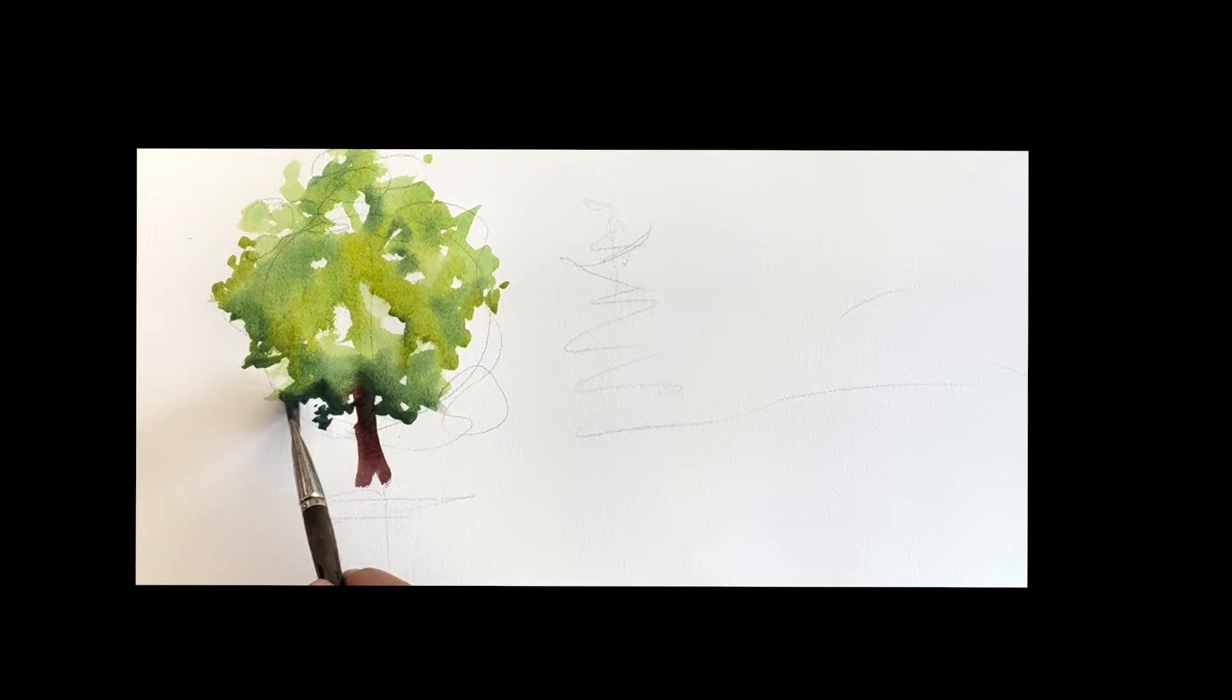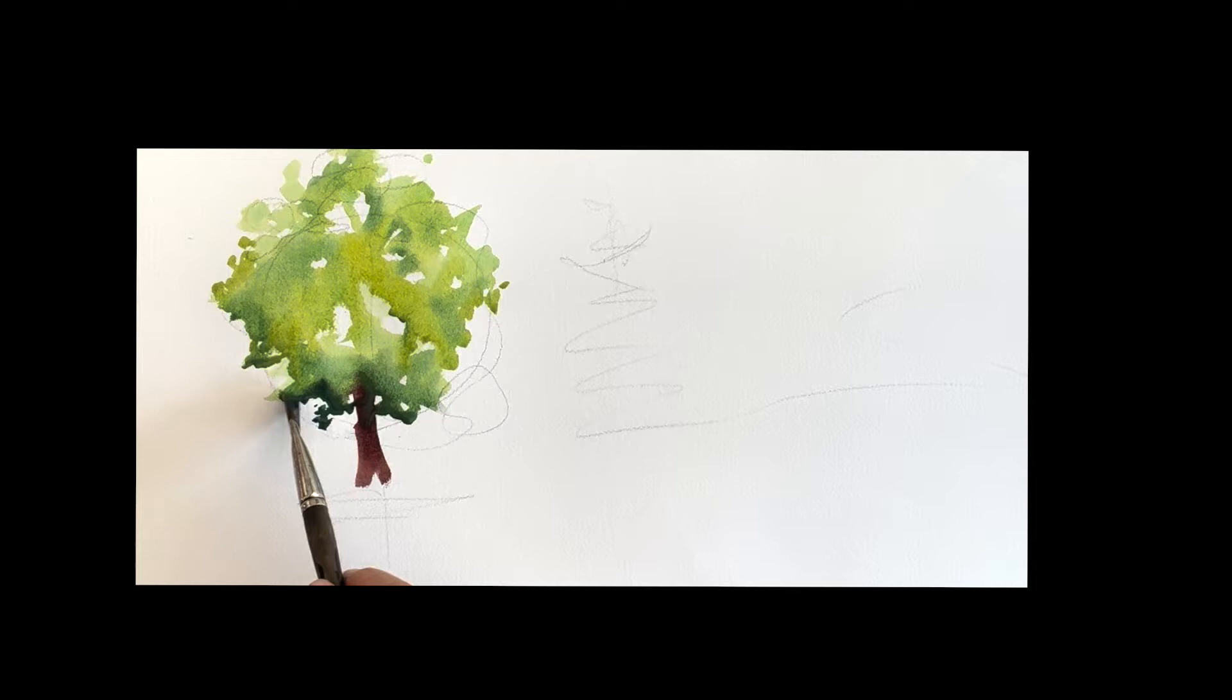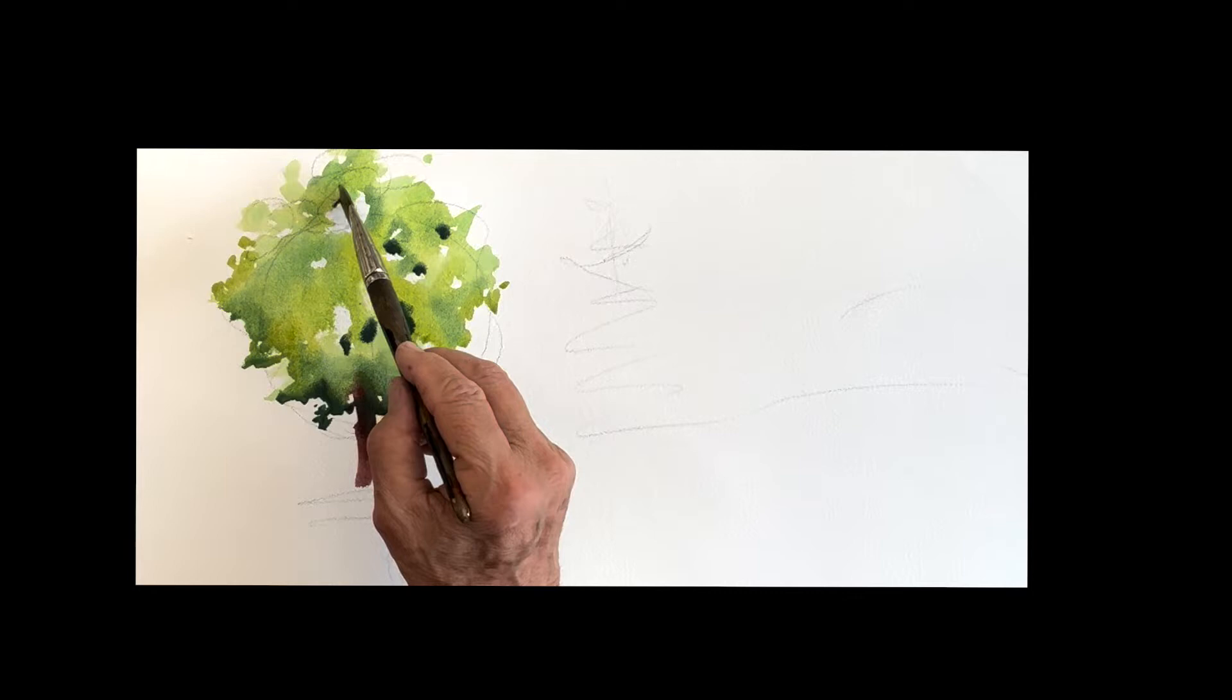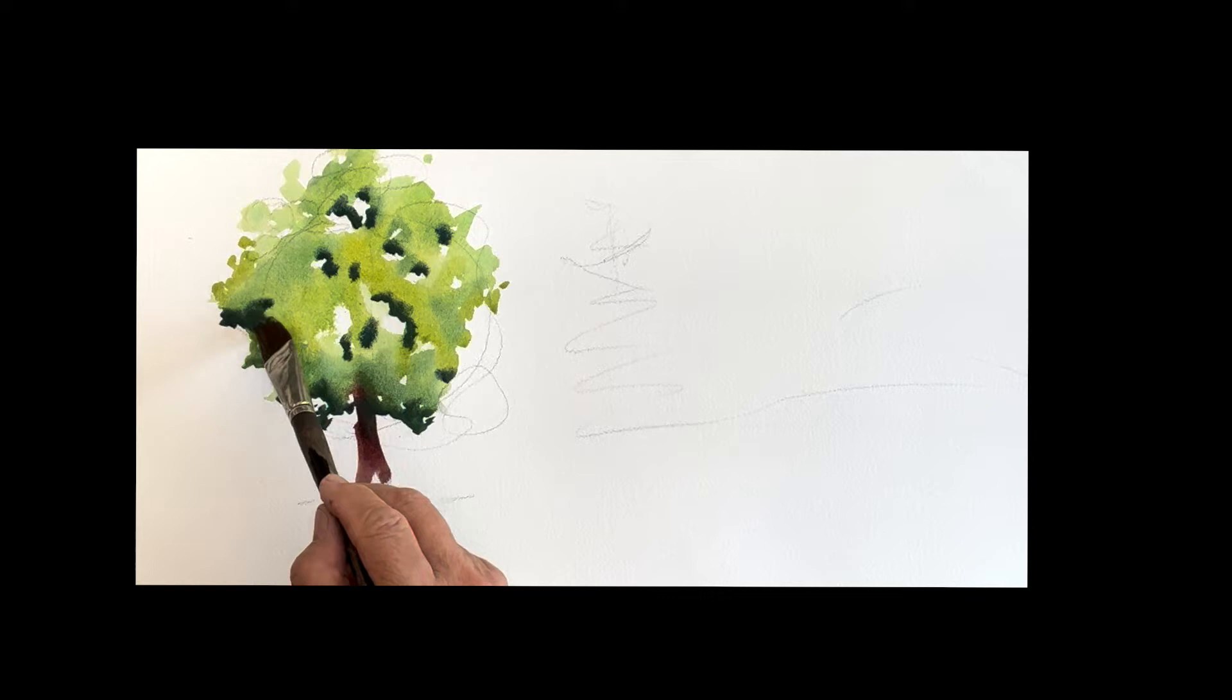And underneath, at the bottom of the tree, there's no light getting in under there. So it's very dark, and there's always branches sticking down. So I'm dropping these darks in around the sky holes, because there's no light getting in the sky holes. And the dark gives you a nice sense of depth in the tree, and that's basically it.